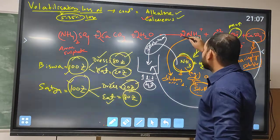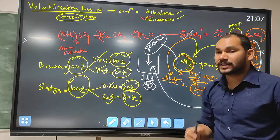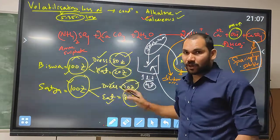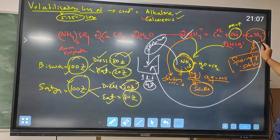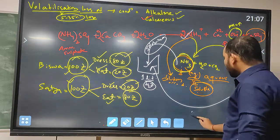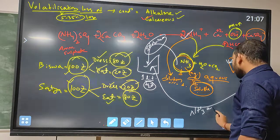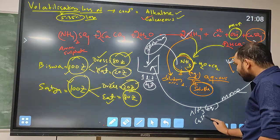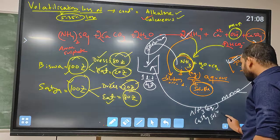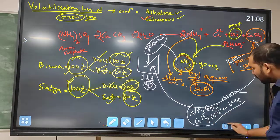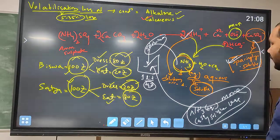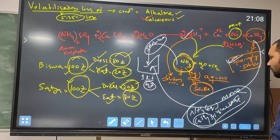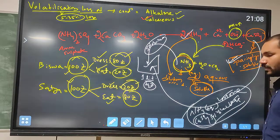Since calcium sulfate is sparingly soluble, in the solution the concentration of NH3 aqueous will be more, whereas the concentration of calcium sulfate will be less. The NH4 plus form has the dilution effect, so whatever ammonium gas is released stays predominantly in aqueous form, giving a higher partial pressure.